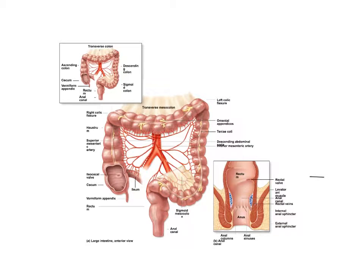Here's the large intestine anatomy. Looking at this picture, you can see where the small intestines hook into the large intestines. The cecum is a blind pouch where they connect.